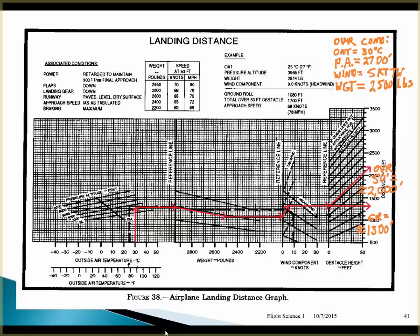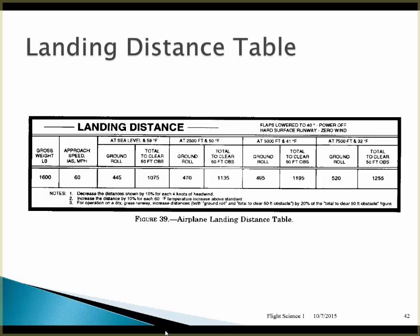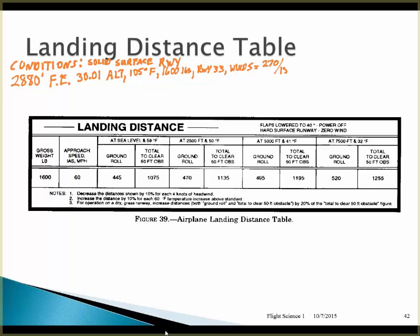Let's look at another landing distance table — the tabular form. Conditions: solid surface runway, field elevation 2,880 feet, altimeter 30.01, temperature 105 degrees Fahrenheit, weight 1,600 pounds, and we're using runway 33 with winds 270 at 15 knots. It's a little more in-depth.